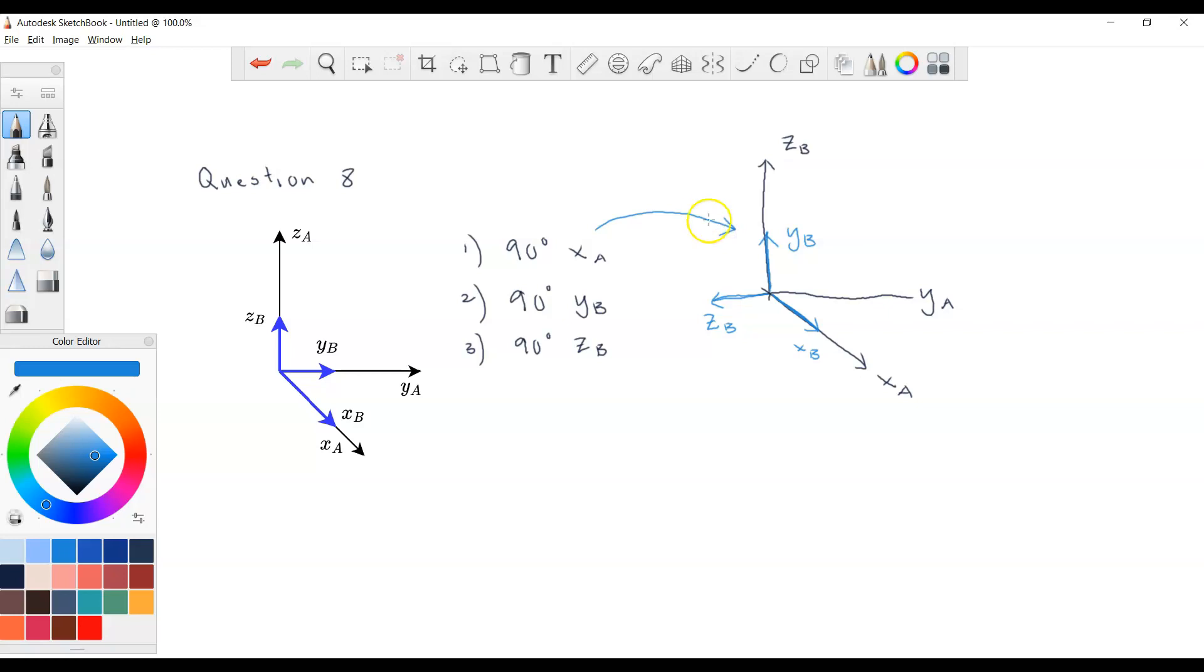So what happened next? Next, we have to rotate 90 degrees about yB, so yB is here now. Do not refer to this one, because we have just rotated the coordinate frame. There's no cube here, but we have rotated the coordinate frame, so yB is here, so we have to rotate 90 degrees with respect to yB.